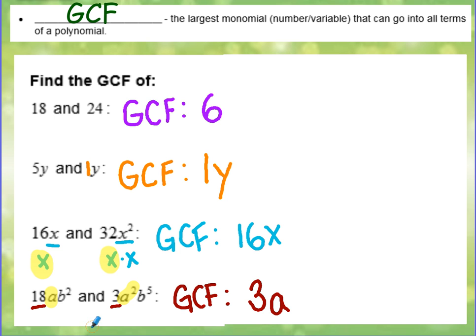If we take a look at the b variable, this one has 2, and this one has 5. So if you think of it like this, 18ab squared, they have 2b's. And 3a squared b to the 5th has 5. So the most amount that they have in common or share, they have this one in common and this one. So they have 2b's in common or b squared. So 3ab squared is the GCF of these two terms.